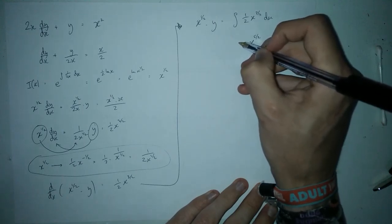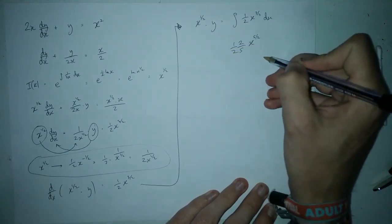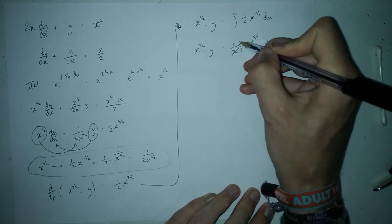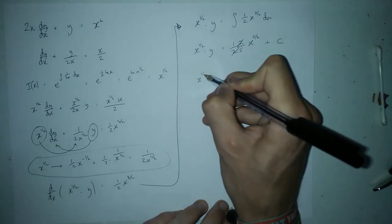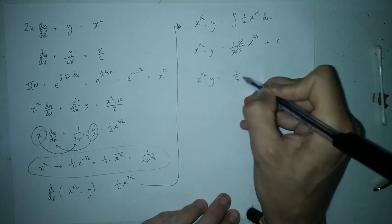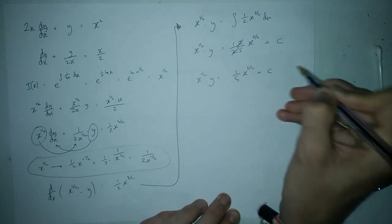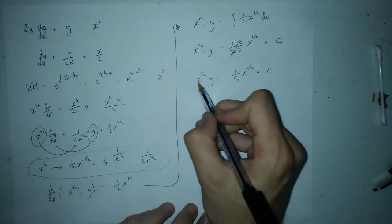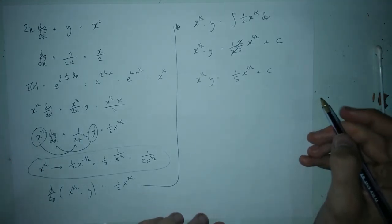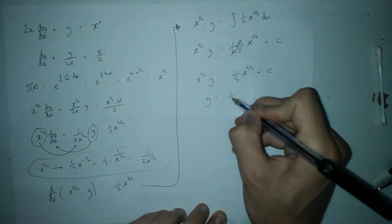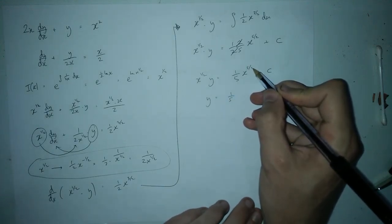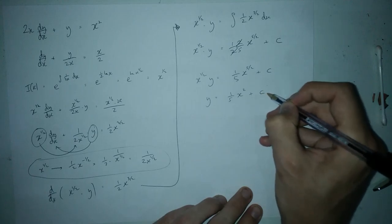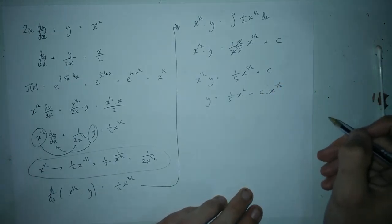The 2 in the numerator and the 2 from the half cancel out, leaving x^(1/2) · y = (1/5)x^(5/2) + c. To finish, we divide by x^(1/2), or multiply by x^(−1/2): x^(5/2 − 1/2) = x² on the first term, and cx^(−1/2) on the second. So the solution is y = (1/5)x² + c·x^(−1/2).